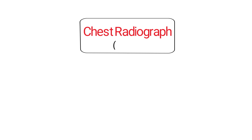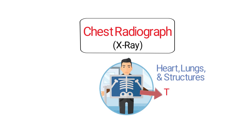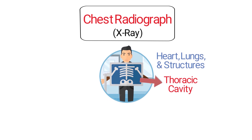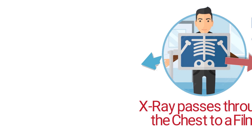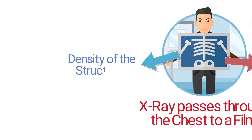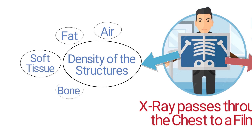First, we have the chest radiograph, or simply known as a chest X-ray. It's a radiographic imaging technique used for the assessment of the heart, lungs, and structures within the thoracic cavity. It occurs as an X-ray passes through the chest to a film, providing a visual representation of those structures. The appearance of the X-ray depends on the densities of the structures within the chest, including air, fat, soft tissue, bone, and fluid.